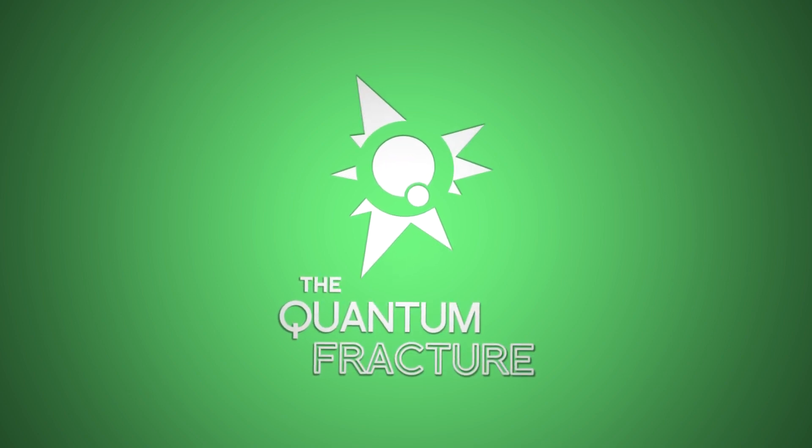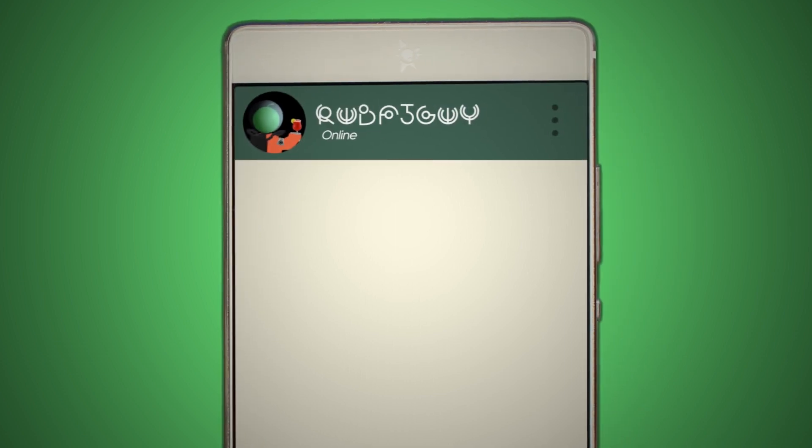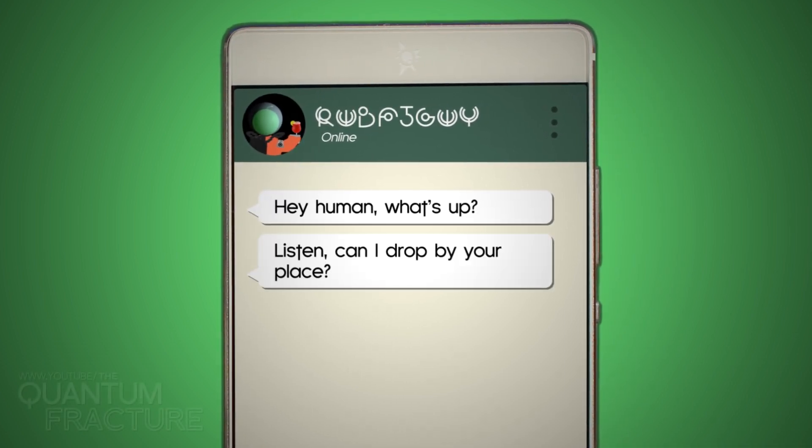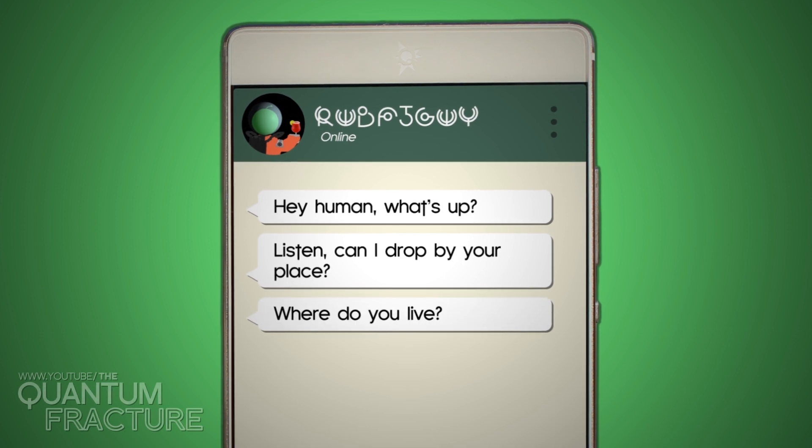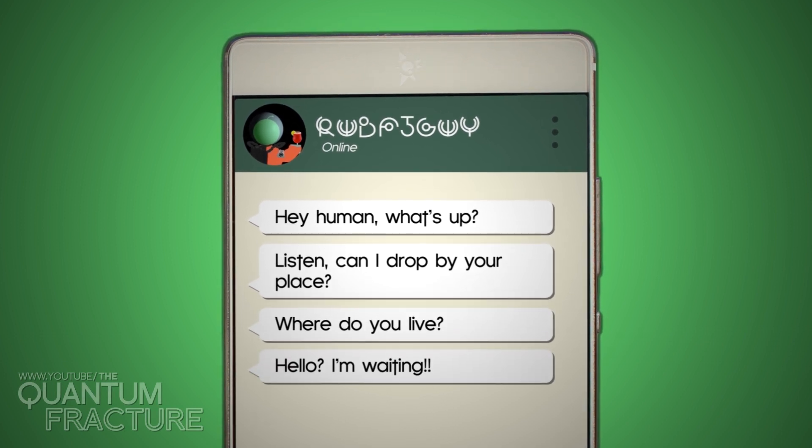Get your thinking caps on, because I want you to imagine this situation. One day, an alien friend texts you and says he's coming to visit. Then he asks for directions to your house. Would you know how to answer?